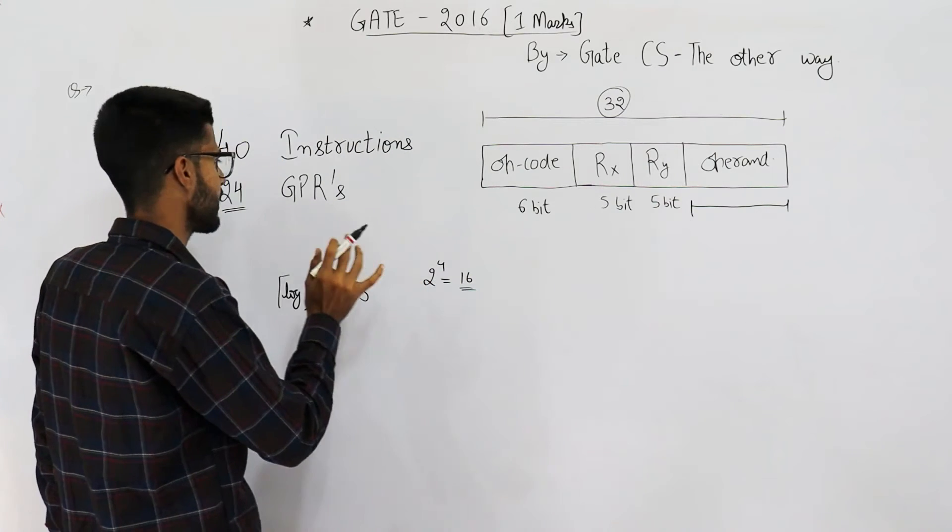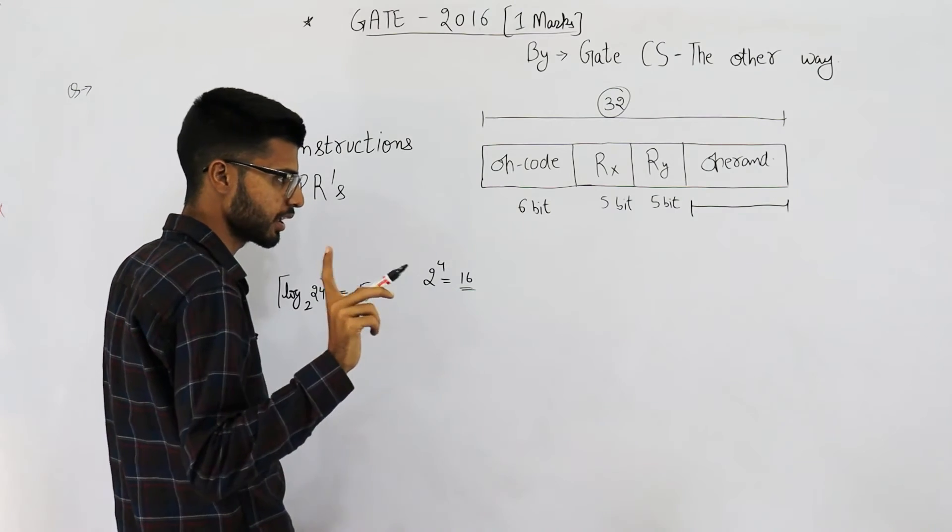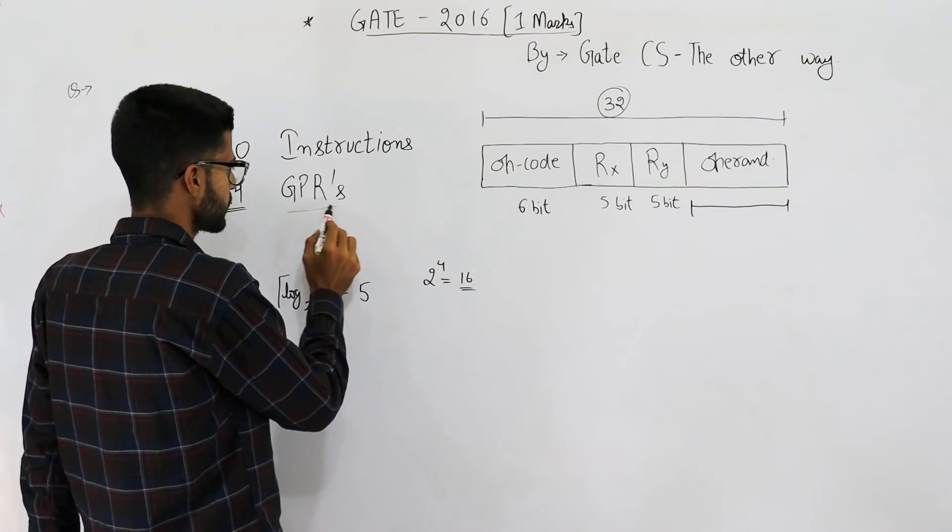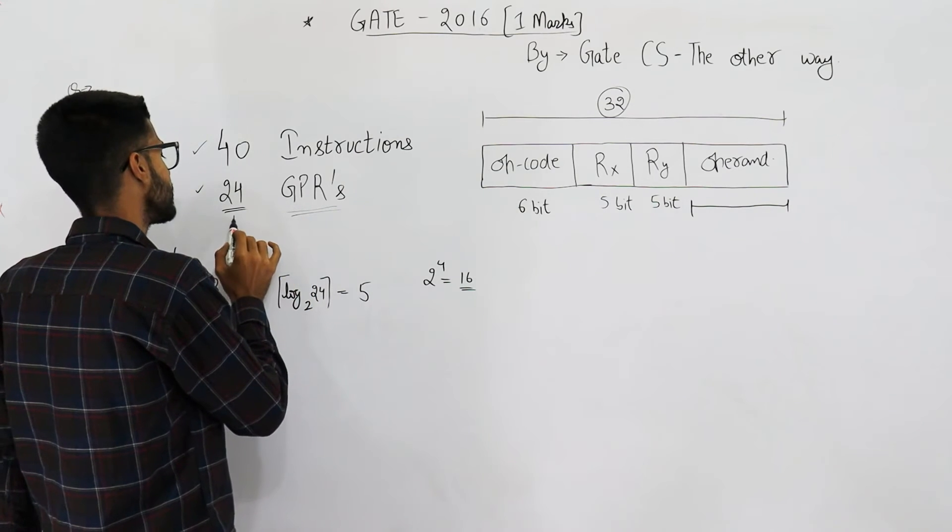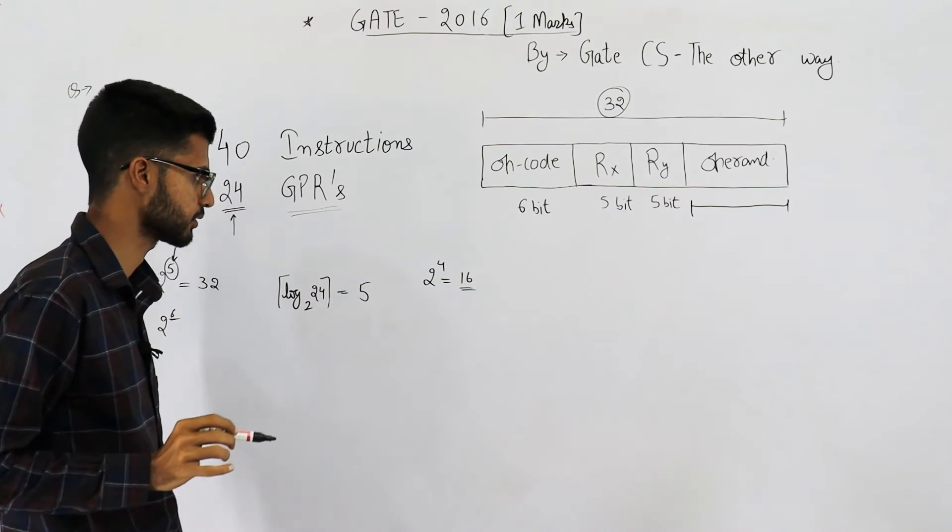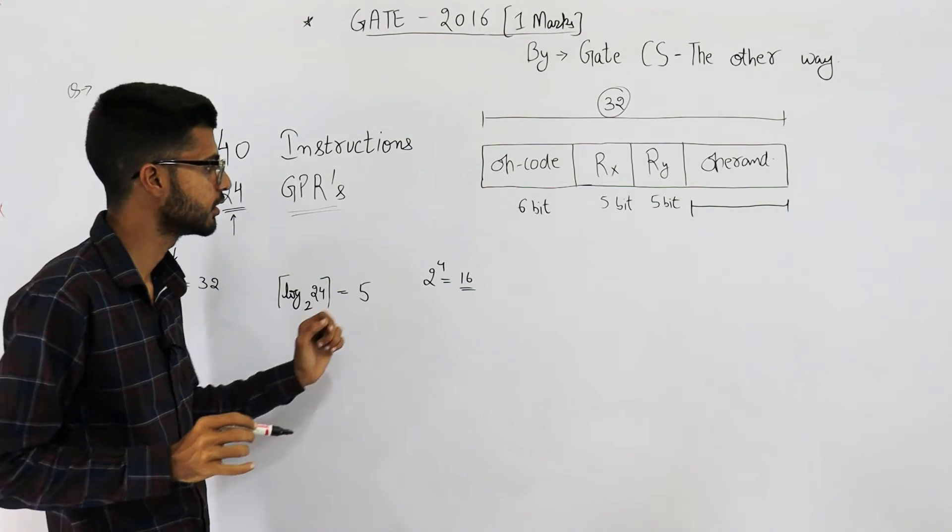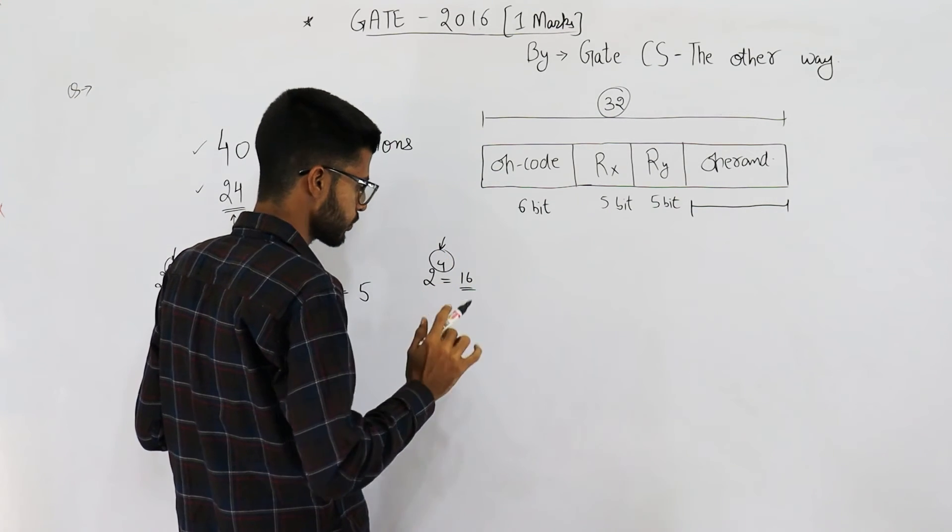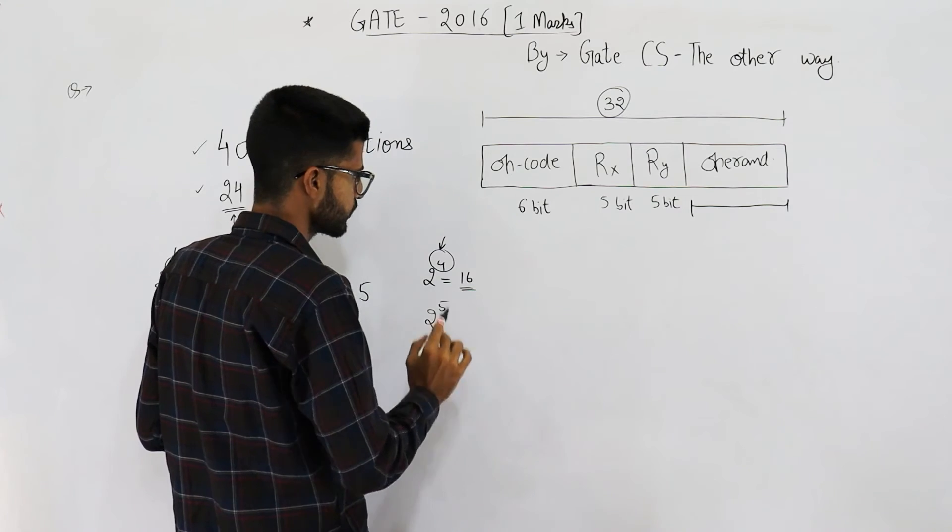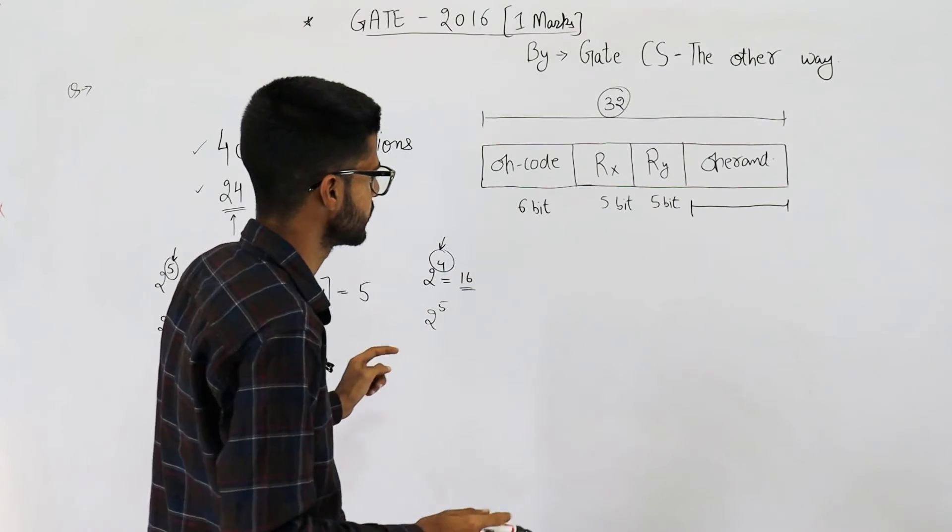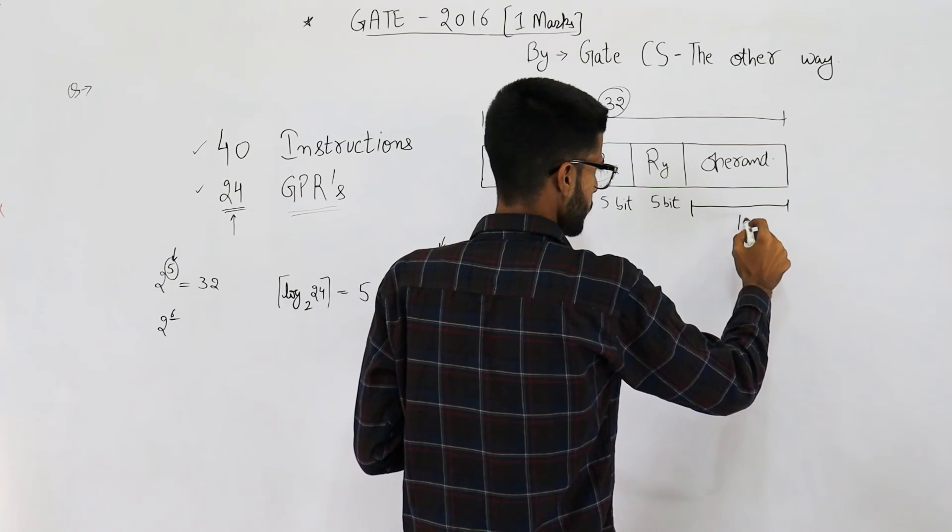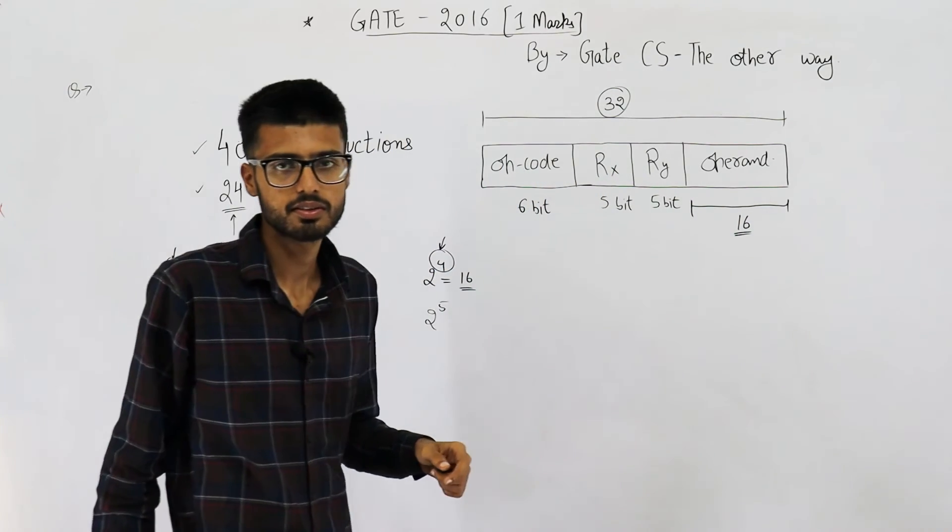If you use only 4 bits, 2 to the power 4 is 16. You can address only 16, you can uniquely identify one of any 16 general purpose registers. But in this case you have 24 GPRs. That means you need to have one more bit. 4 bits won't work, you need at least 5 bits. So now you can see, this much is 16, total is 32, so the operand has to be of 16 bits. That's your answer.